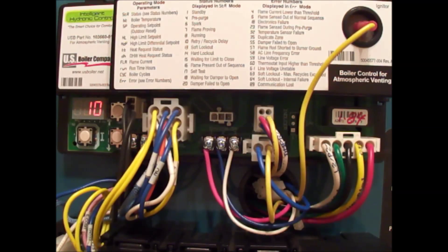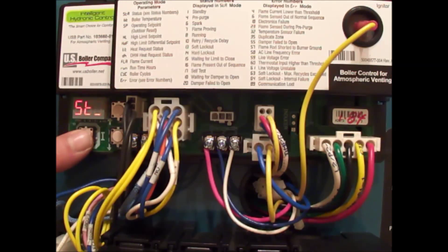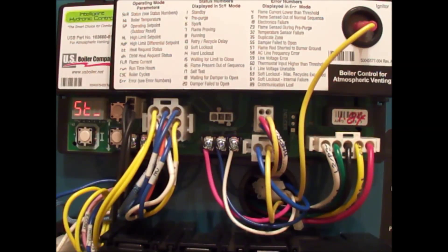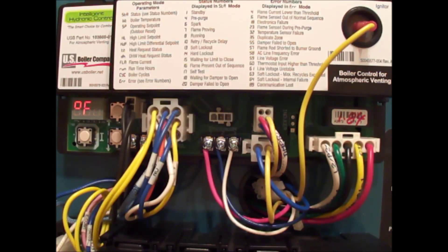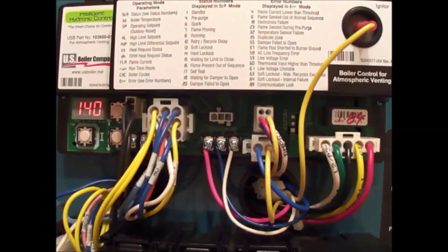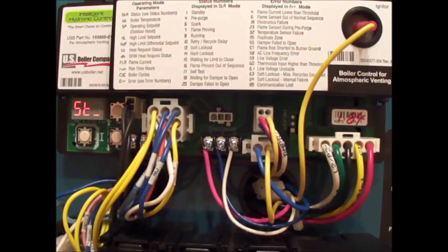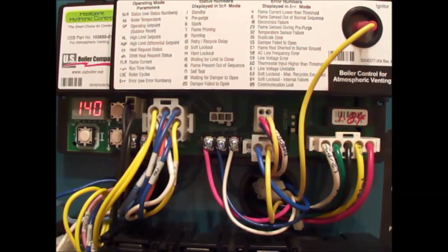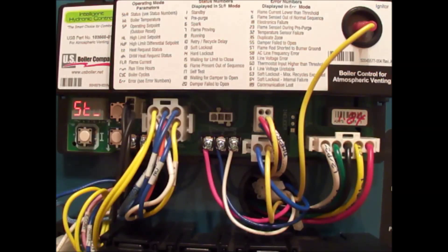The next one is start temperature. We can change the start temperature—I said it has to get below 140. We can raise that depending on your application. If you have kick space heaters or duct coils in your heating system, you may want to change that. But bear in mind there's not much water volume in these boilers, so it normally wouldn't take very long to drop the temperature, and the higher you make that, the more fuel you're going to use.